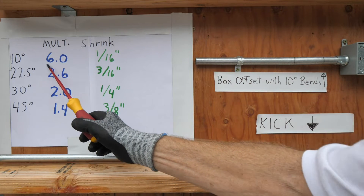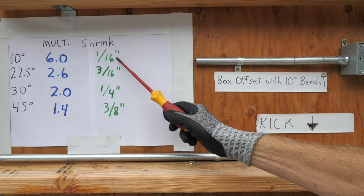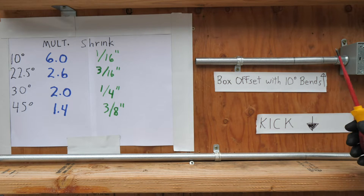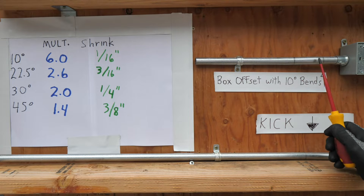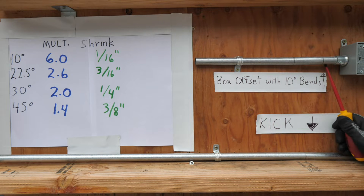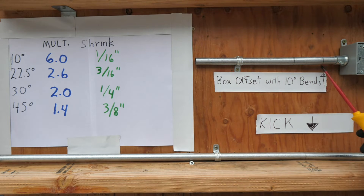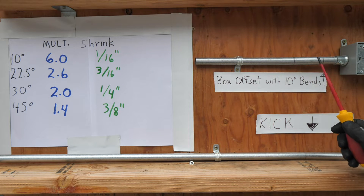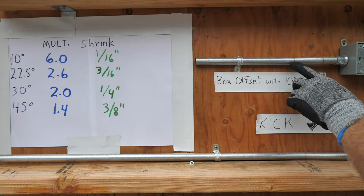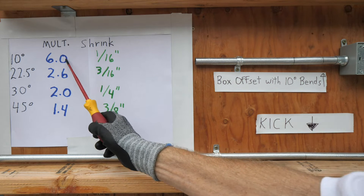Let's start with 10 degrees — this is the multiplier, and this is the shrinkage of the conduit. We have two 10-degree bends for an offset, and the distance the pipe has to jump up off the board is 3/8 of an inch. We use the multiplier times the distance of 3/8 inch, and it comes out to 2 and a quarter. That's how we know the distance between the bends is 2¼ inches — that's 3/8 times the multiplier of 6.